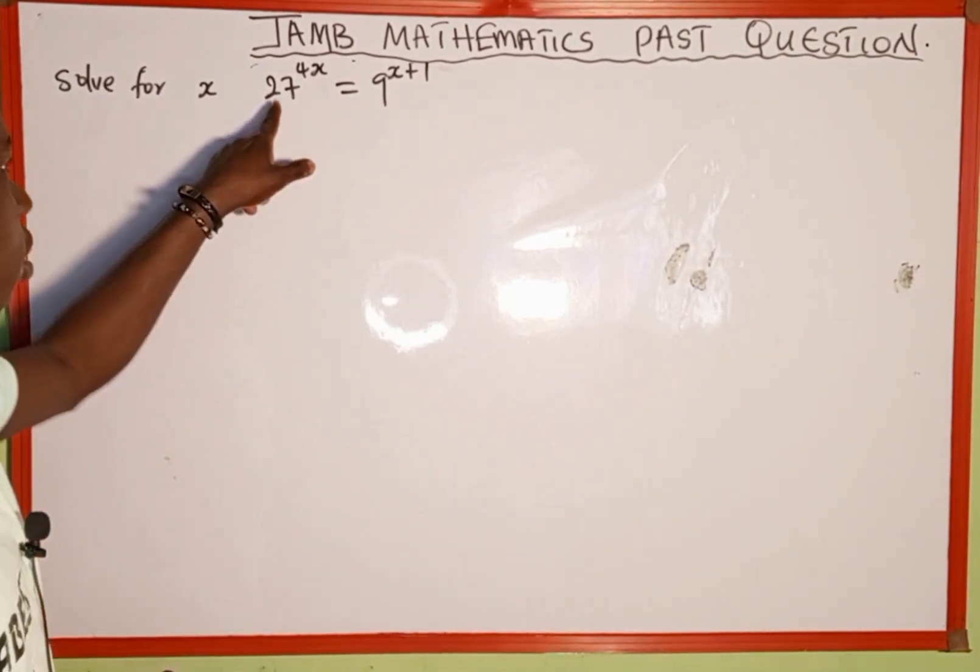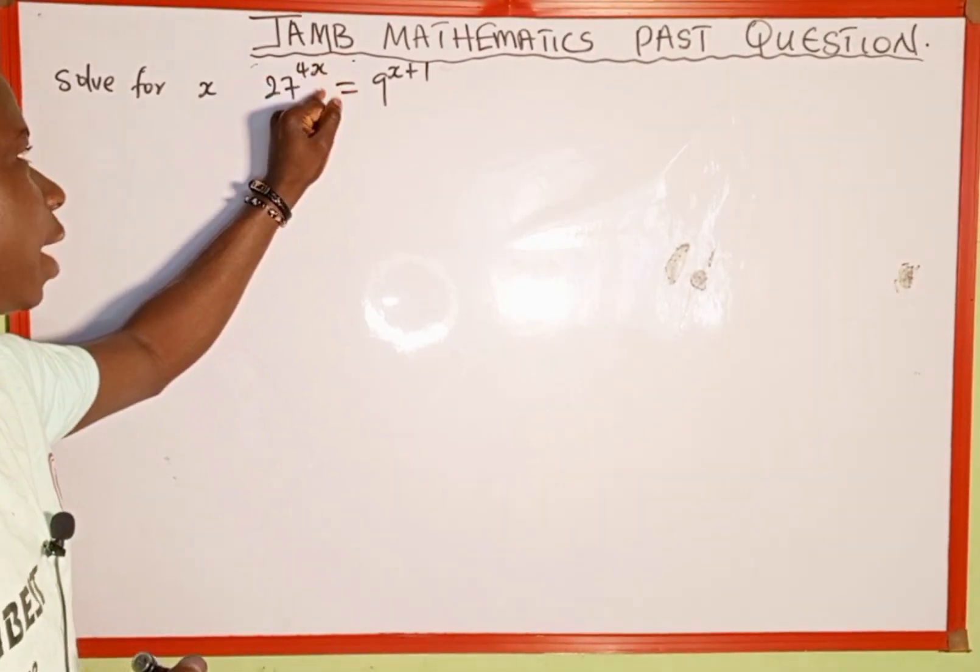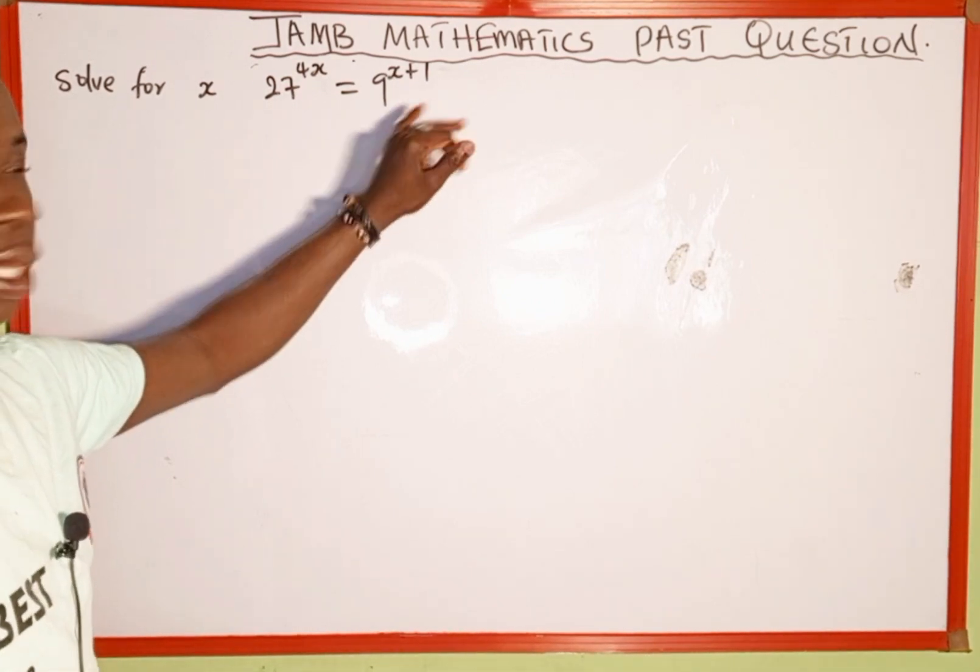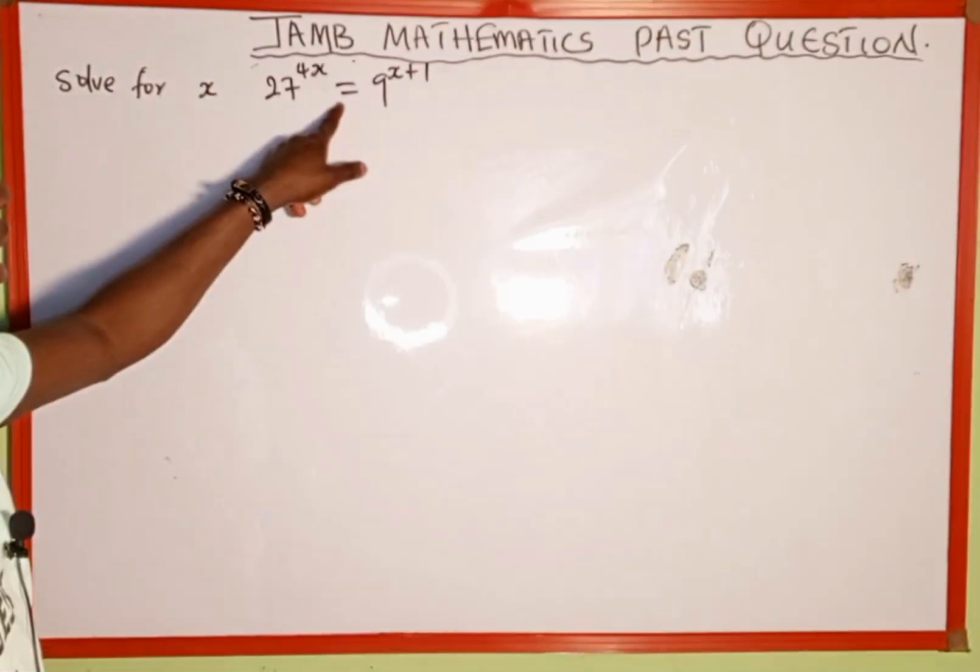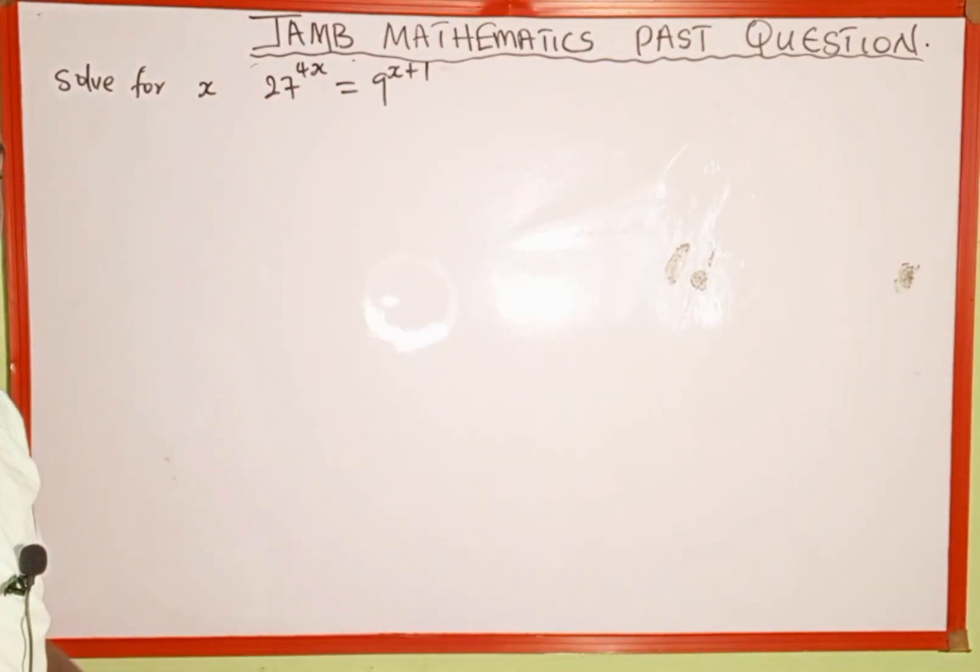The given exponential equation is 27 raised to the power of 4x equals 9 raised to the power of x plus 1. Since we have an equality sign here, the next thing we're going to do is try to make the base the same so that we can equate the powers.